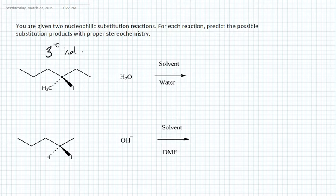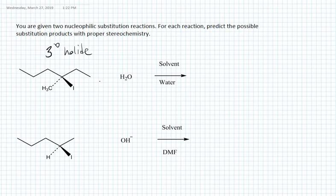The substrate is a tertiary halide — it's a hindered substrate. The nucleophile, water, is neutral so it's a weak nucleophile, and the solvent is water, which is a polar protic solvent. Definitely this reaction will undergo an SN1 mechanism, because tertiary halides react fastest in SN1 reactions, weak nucleophiles favor SN1, and SN1 reactions are faster in polar protic solvents.